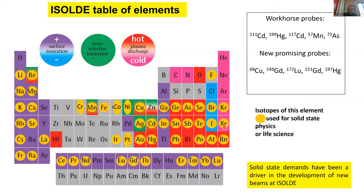Here's the periodic table of elements used for solid state physics at ISOLDE. We have certain workhorse probes: 57 manganese for Mössbauer, 111 cadmium, 119 mercury, 117 cadmium, and 73 arsenic for hyperfine studies. Being able to choose a radioactive isotope allows us to look at its decay properties. In addition to these workhorse probes with guaranteed beam times every year, we have more niche applications covering almost the whole periodic table. The solid state community has also been a driver in the development of new beams at ISOLDE, including the laser ion source which came online in 1994-95.